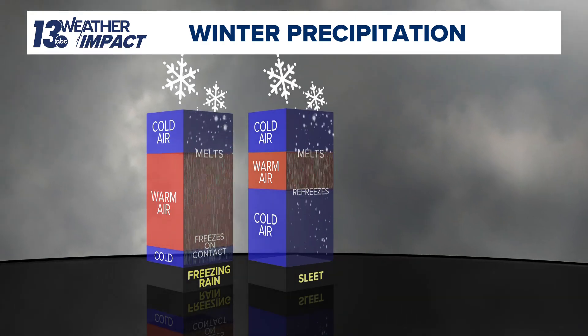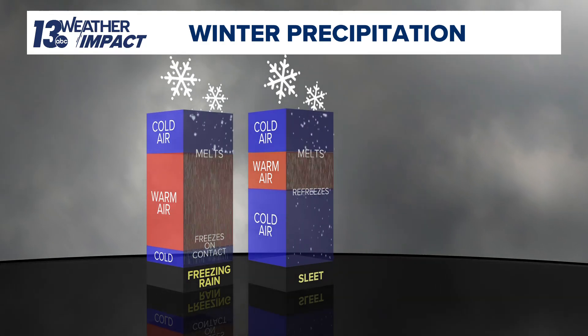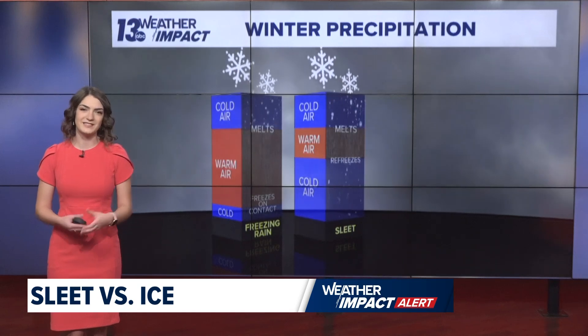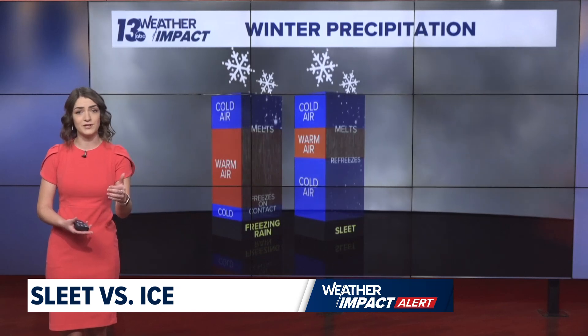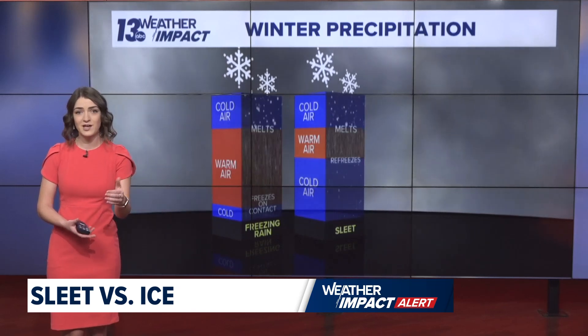So the difference between freezing rain and sleet — a wintry mix — really comes down to how large that warm layer is and how close it is to the Earth's surface.